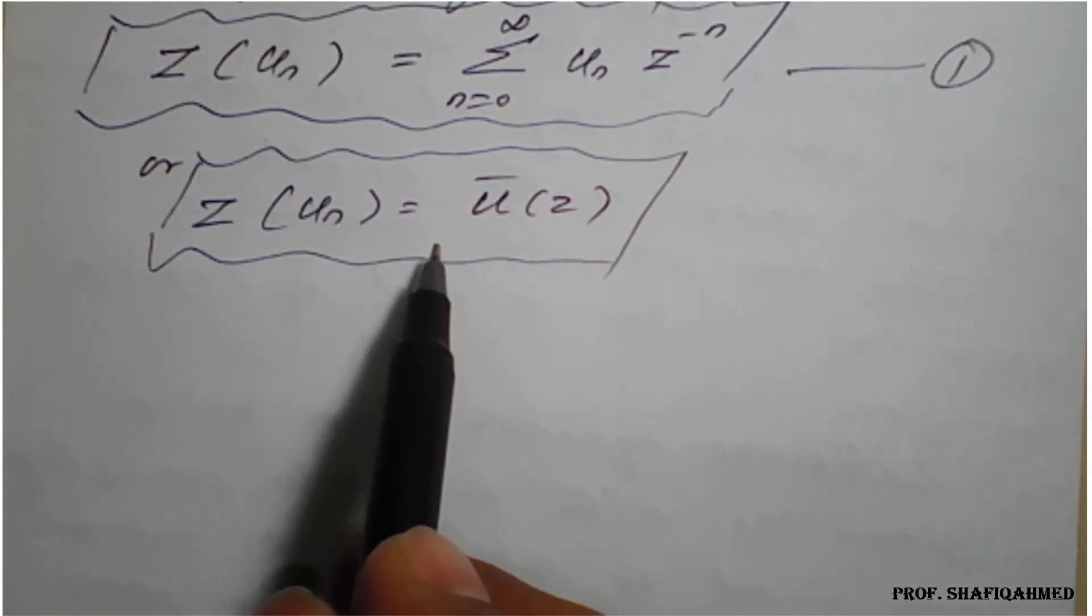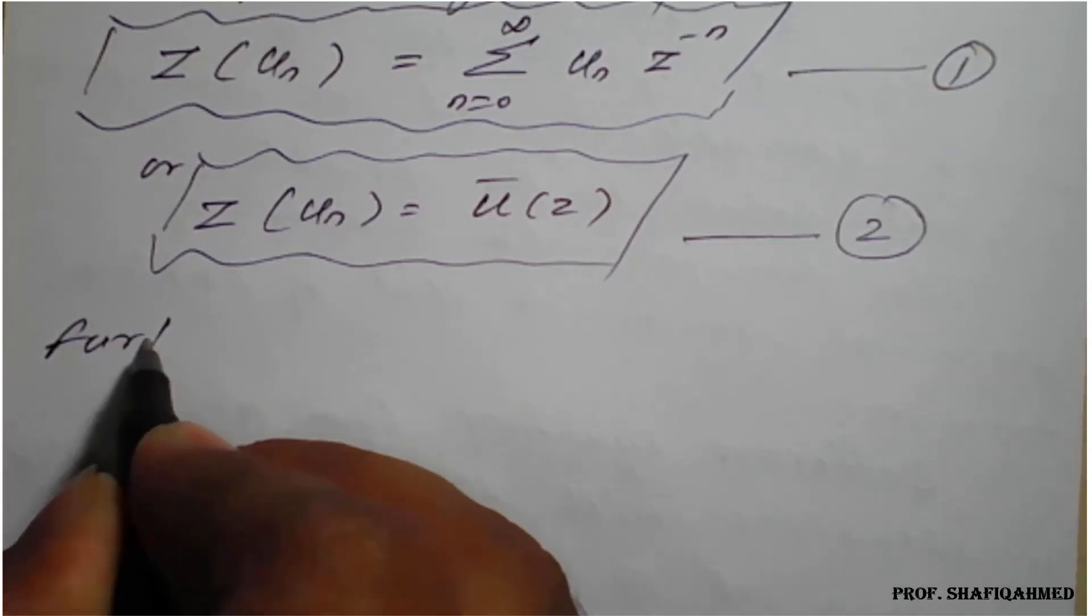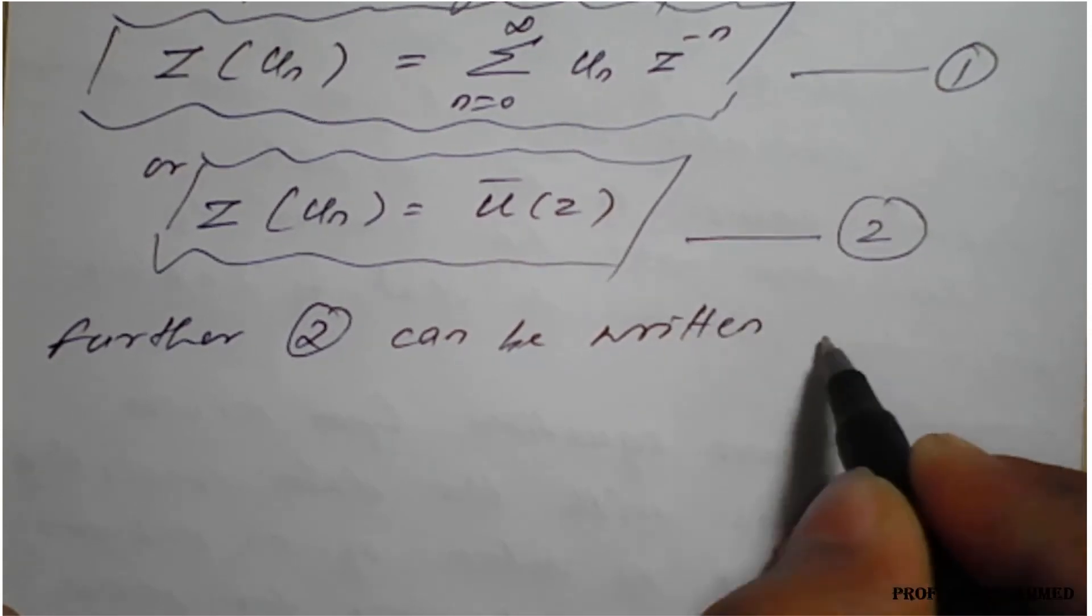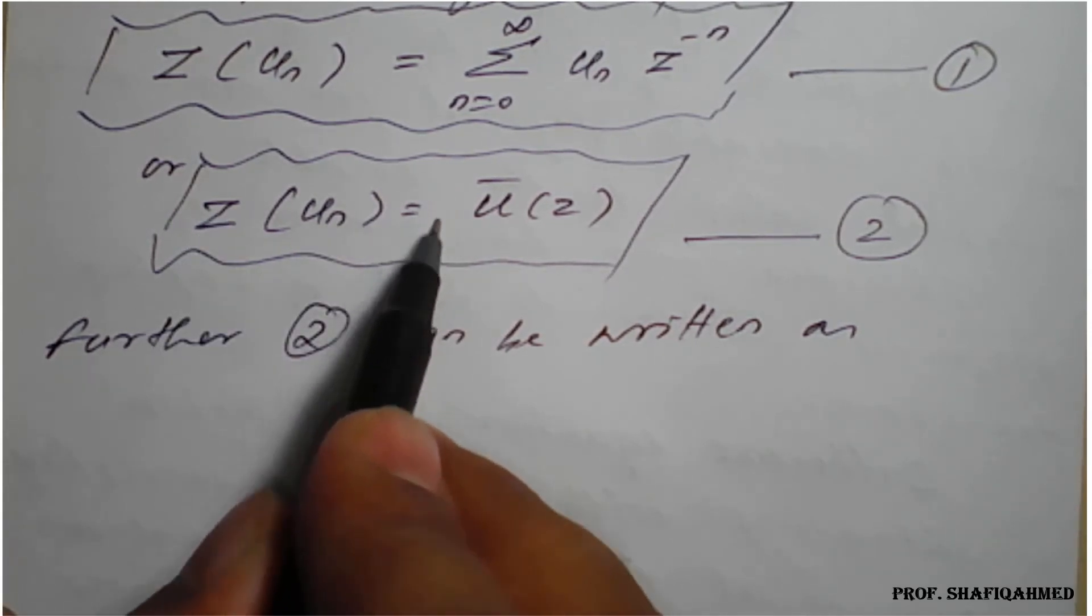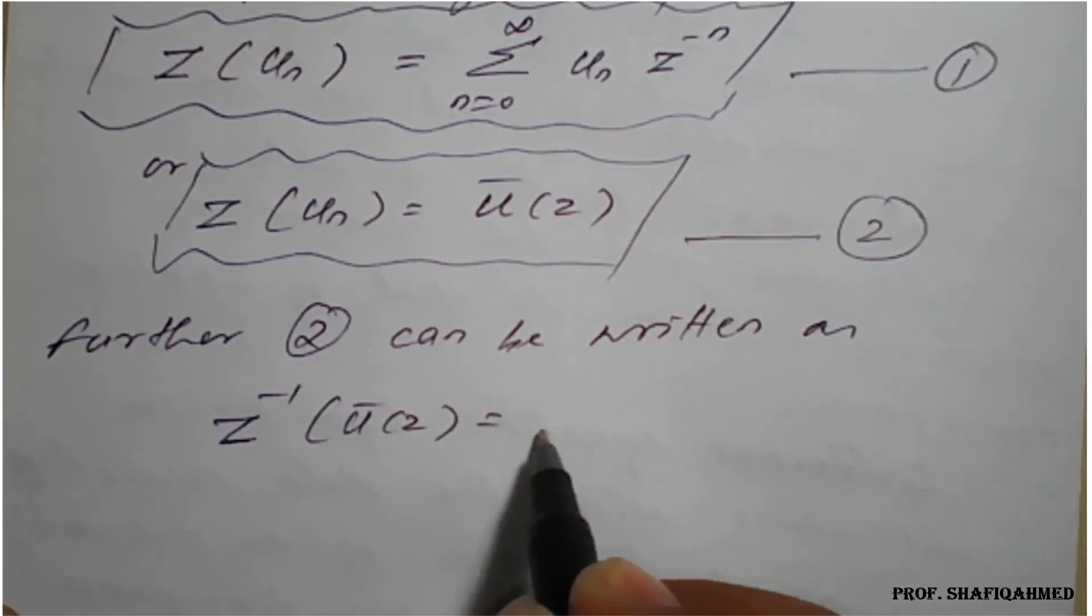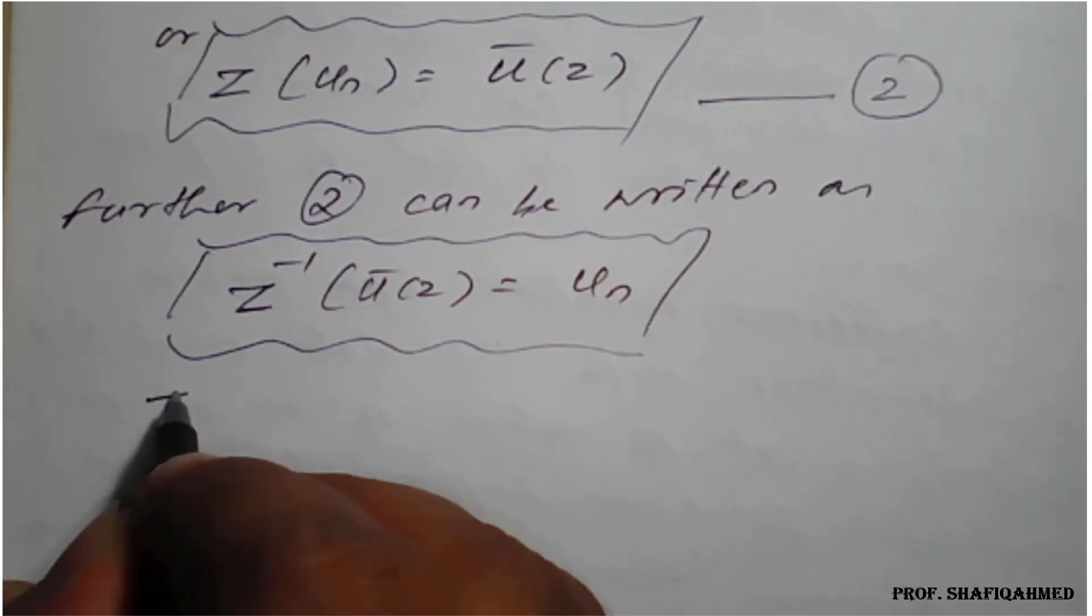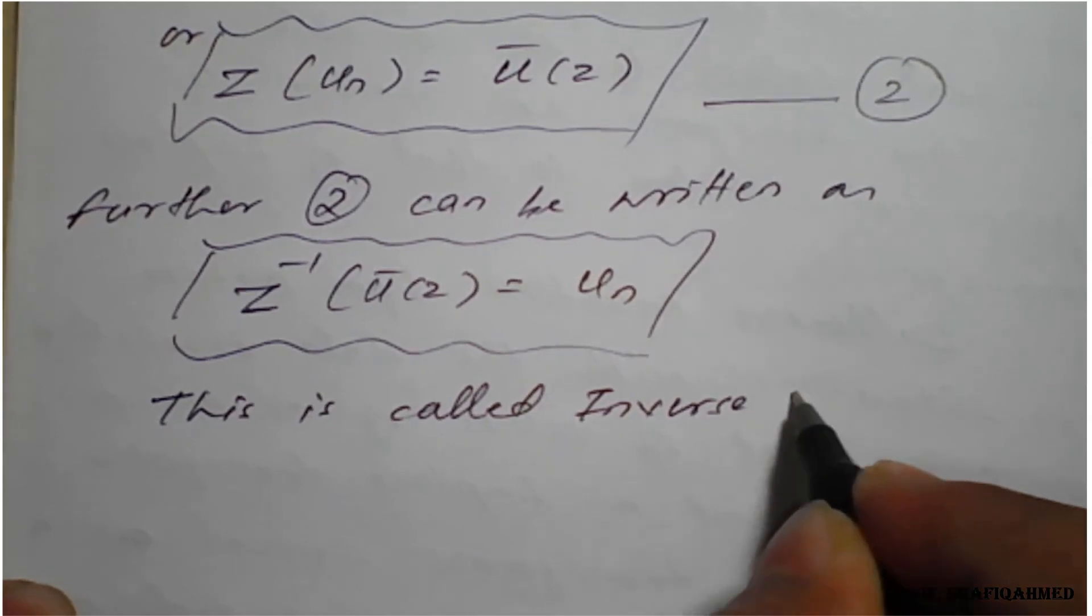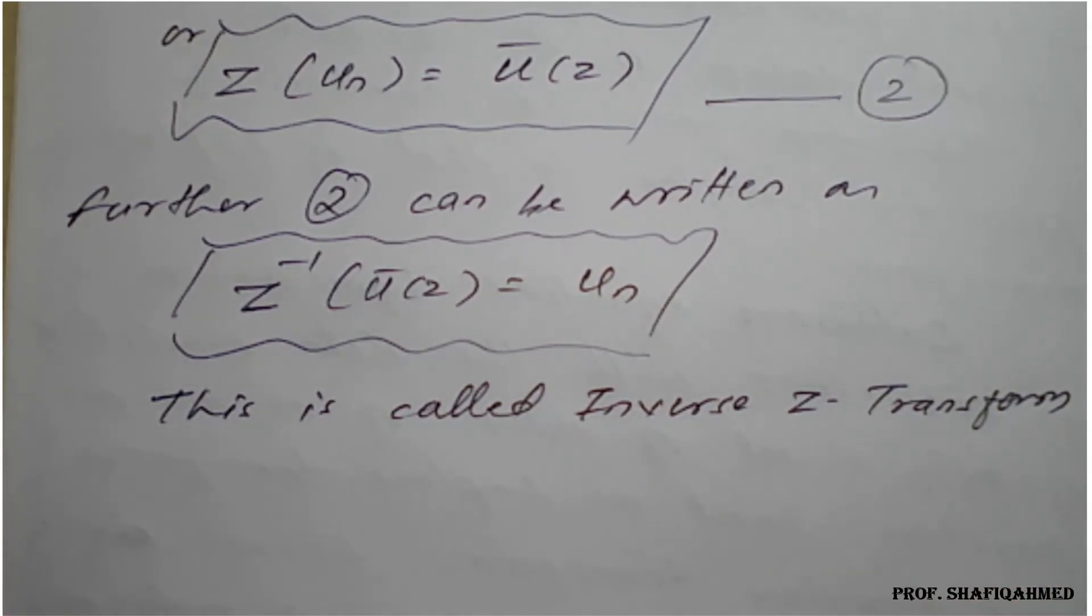Further, equation two can be written as: if you shift this z to the right-hand side, it will become 1/z, which can be written as z raised to minus 1. So z raised to minus 1 of u'(z) is equal to u_n. So this is nothing but inverse Z-transform. This is called inverse Z-transform. So remember what is Z-transform and inverse Z-transform.